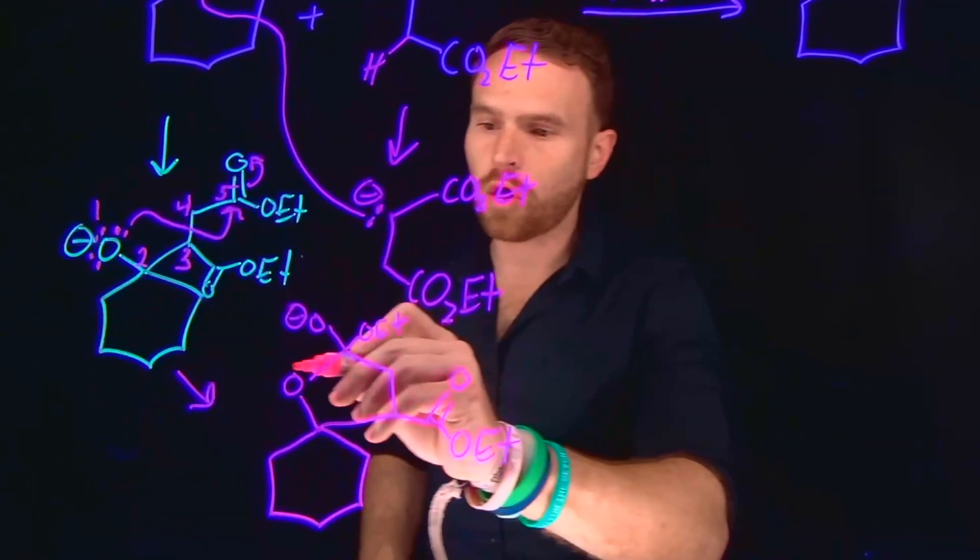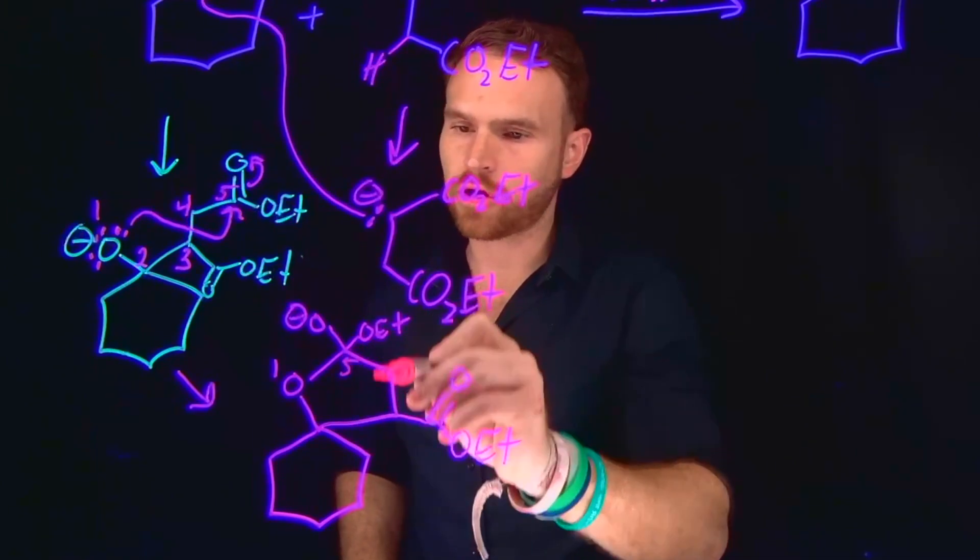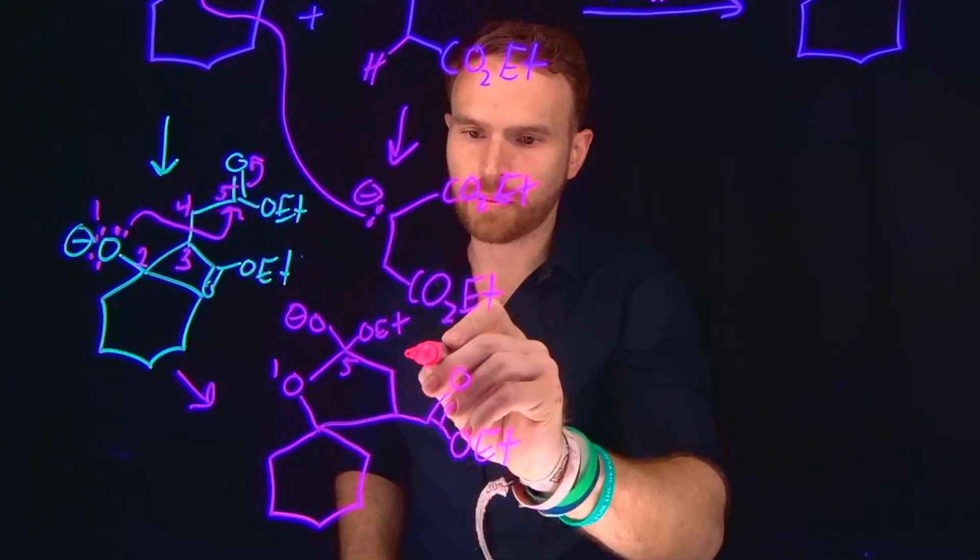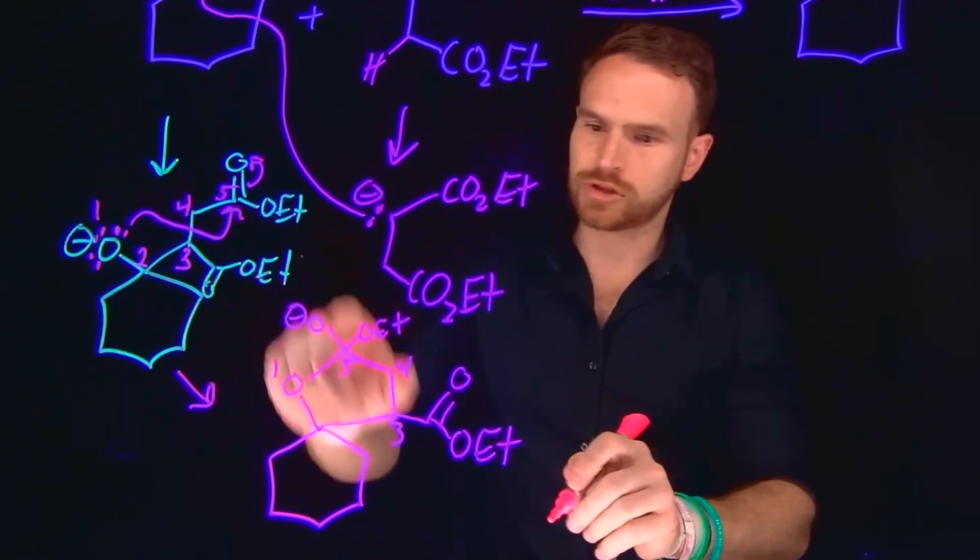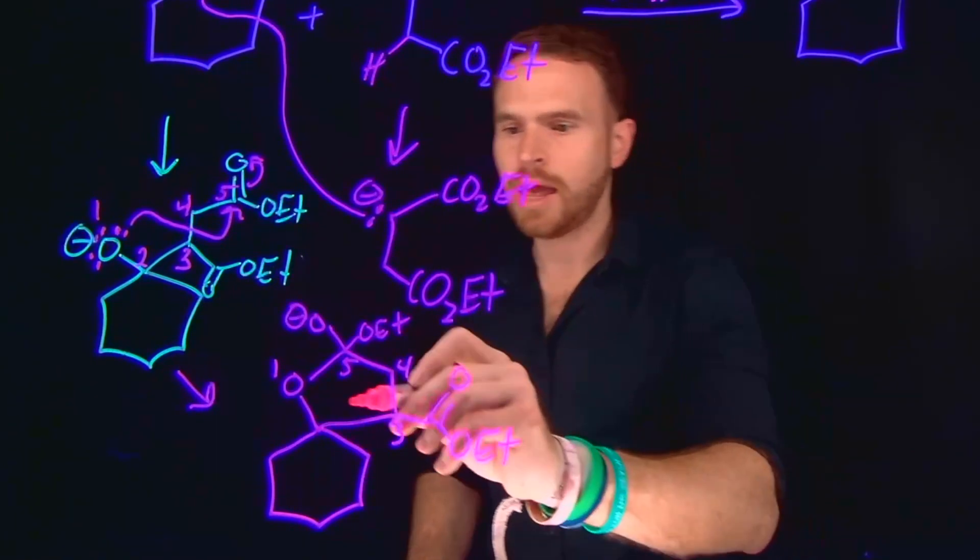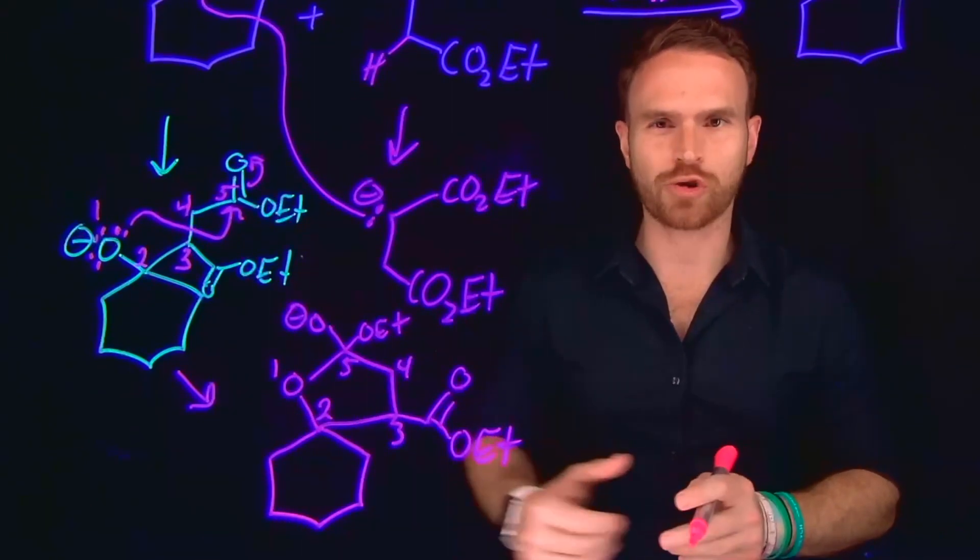If we consider position one to be the oxygen, then it attacked position number five of the carbonyl, which means that carbon number four is here. Carbon number three is here, which is where the ester is coming off, and it's still coming off here. This makes this position number two of that new five-membered ring. This is how you can check your structures.